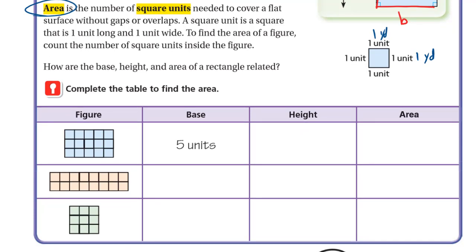The perimeter, if you remember, was the length around the figure. So the perimeter is the length around the figure, and the area is the number of squares inside the figure.